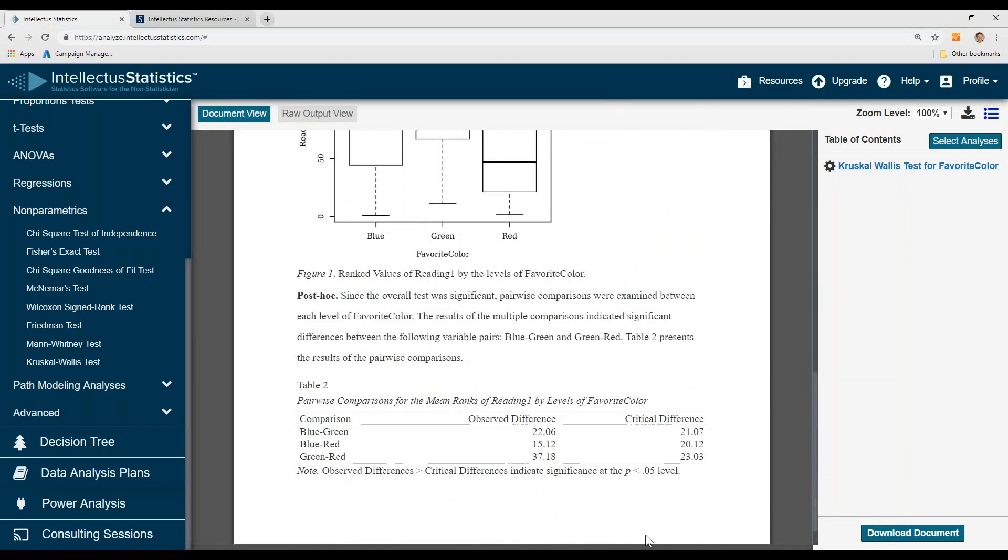So for the post hoc test, what you can see is the comparisons of the different colors. What you want is the observed difference to be higher than the critical difference. And for the blue-green, there were differences on Reading 1, because the observed difference is higher than the critical, and also in the green-red comparison, but not in the blue-red.